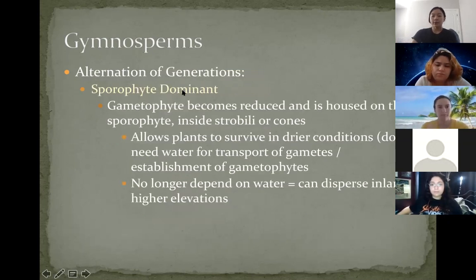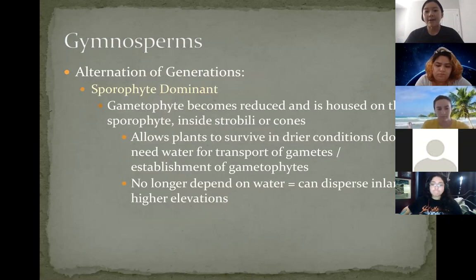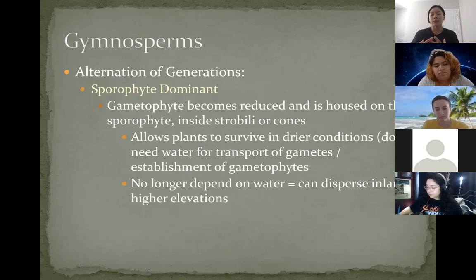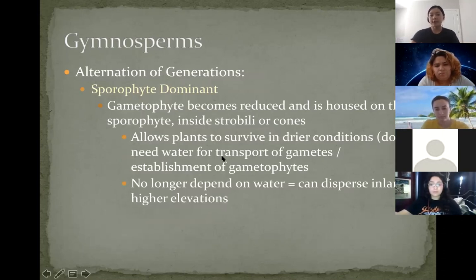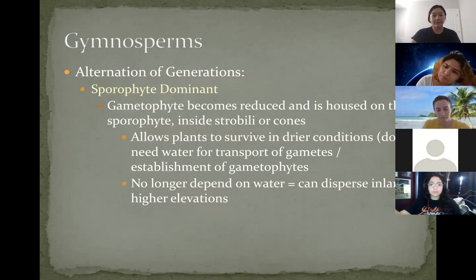With gymnosperms, they are sporophyte dominant, so the gametophyte becomes completely reduced and is housed on the sporophyte — typically inside the strobili or inside the cones. Because they are sporophyte dominant — or diploid dominant — they now have two copies of the genome and are a lot more complex compared to gametophyte-dominant basal land plants. This allowed the plants to survive in much drier conditions because the spores no longer need water for the life cycle to be completed. They no longer need water for gamete transport or gametophyte establishment, allowing them to disperse inland, live at higher elevations, and thrive in drier, more arid environments.